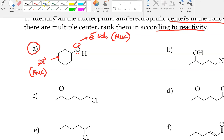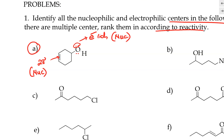Now let's analyze the electron-deficient or electrophilic centers in this molecule. Electrophilic centers are the atoms in the molecule that are partially positive. Due to electronegativity, the oxygen inductively pulls electrons away from the carbon and the hydrogen, making both the hydrogen and that carbon partially positive — these are the two sites in this molecule that can serve as good electrophiles.